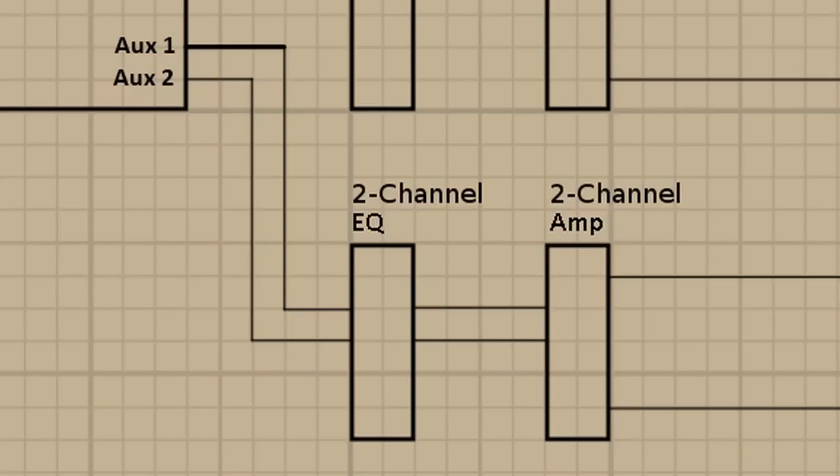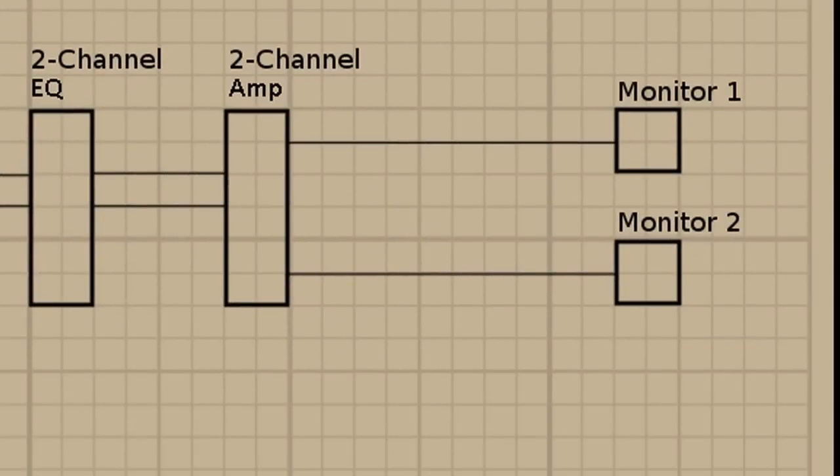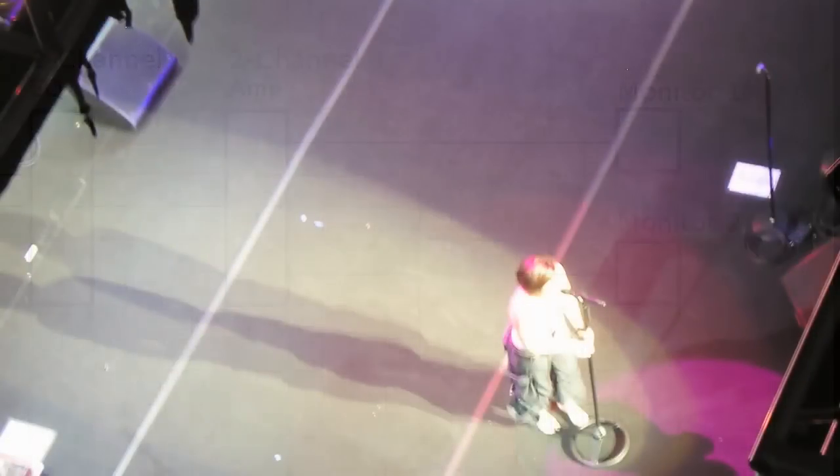And now down here we've got aux one and two, which also would be going through an EQ to compensate for the room and how the room is going to affect the sound. And you want to be able to have some control over that. So you'll run through an EQ. And some people like to do something called ringing out a monitor. And so you might want to have some drastic EQ changes just for your monitor mixes to mitigate feedback and get the volume up at a high level for your performers without experiencing feedback. But we can talk more about that in another video. And next we've got a two-channel amplifier, and that's going to monitor one and monitor two.